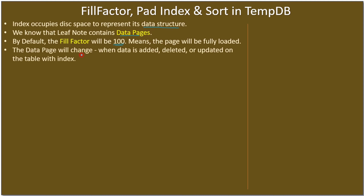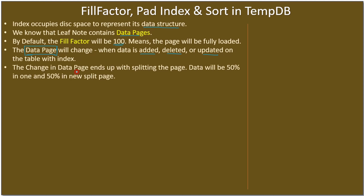The data page will change over the period of time when users are using the database or client applications are making changes to the data. During those times the data page will change — say for example when data is added, deleted, or updated on a table with an index. These changes in the data page end up with splitting the page.